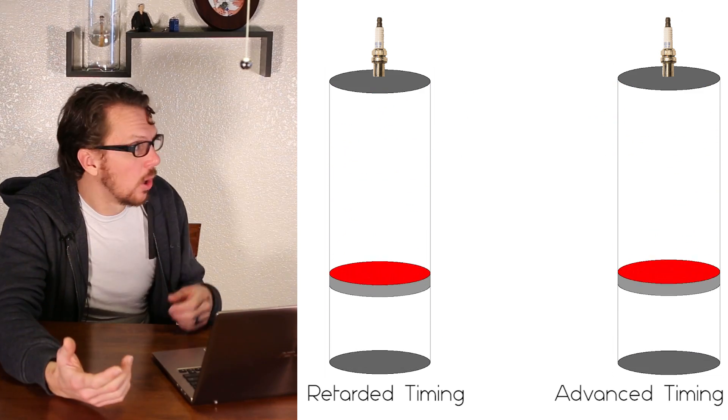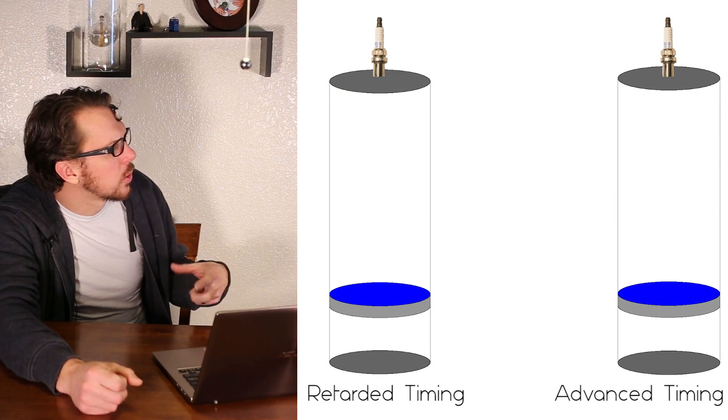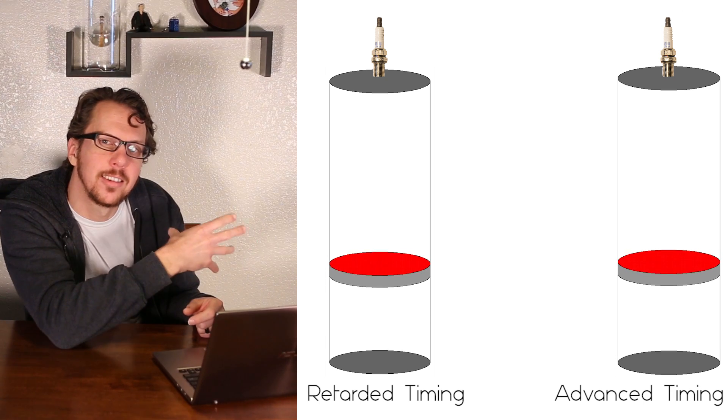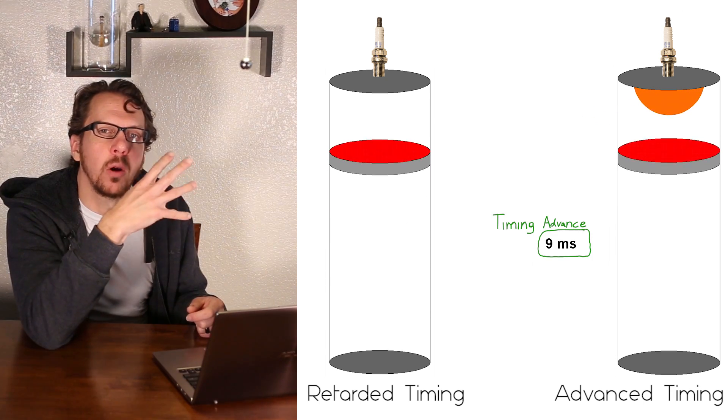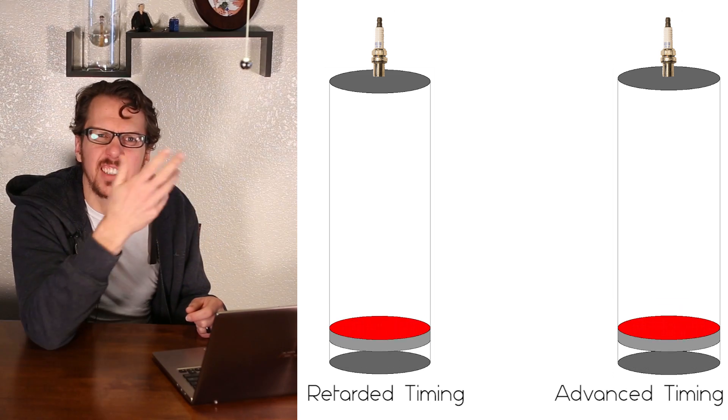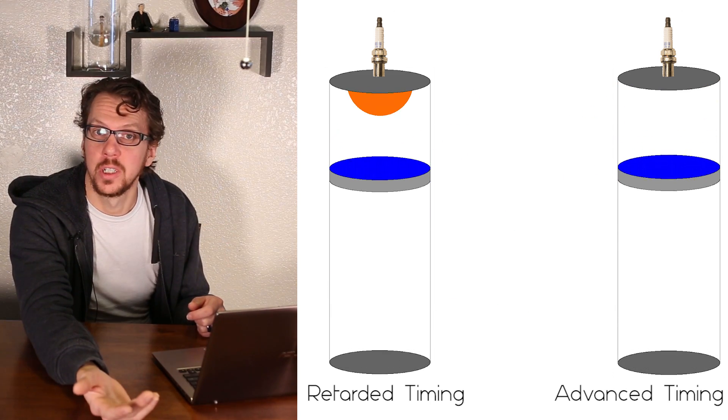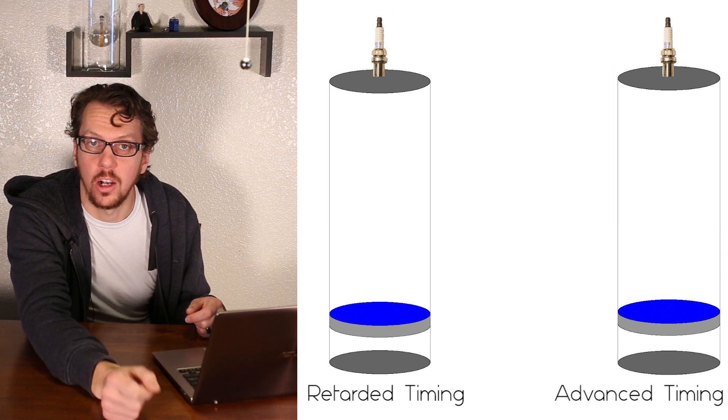The same argument also works with turbochargers and superchargers. The turbochargers and superchargers compress the gas into the cylinder, so the starting pressure is already quite a bit higher. So then it gets compressed, and if your octane rating isn't high enough, it will cause pre-ignition and you'll get engine knock.